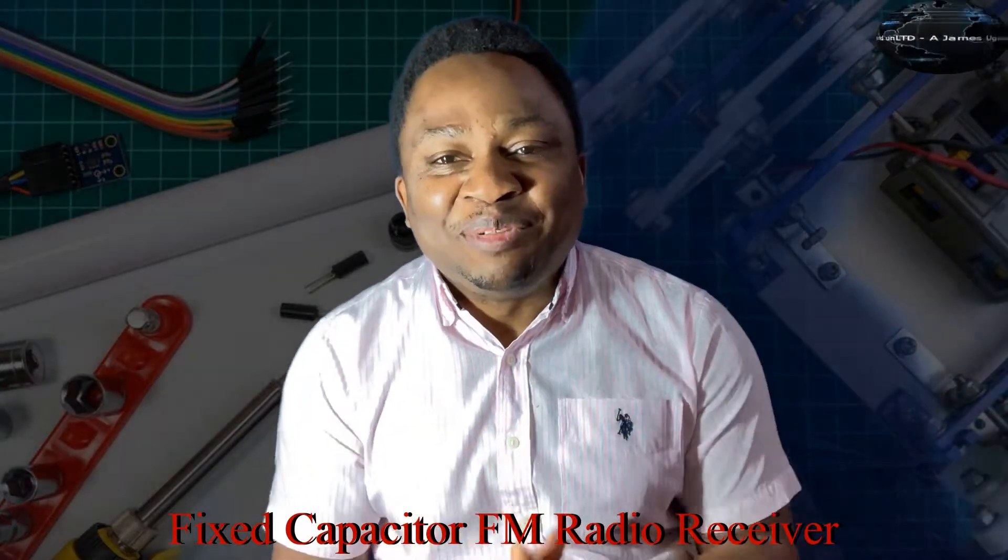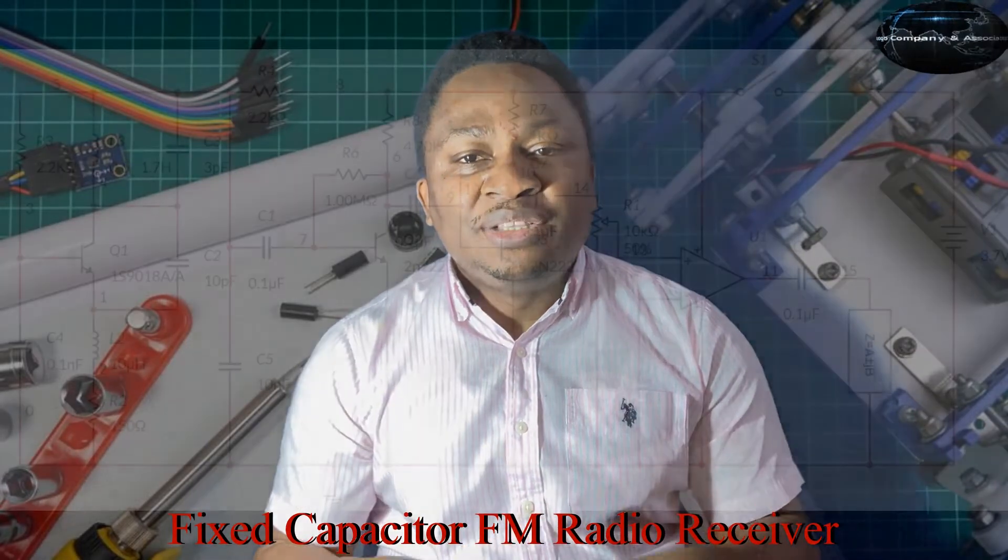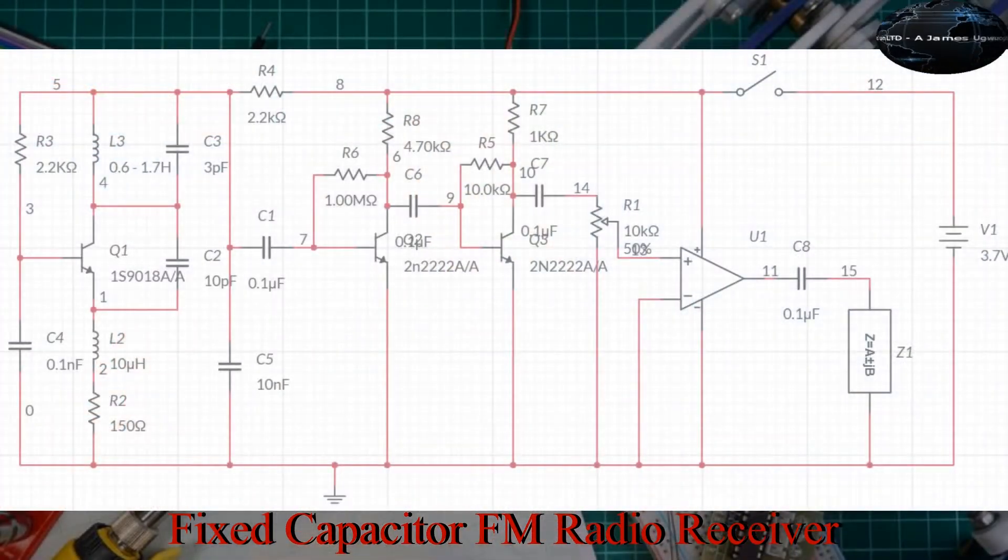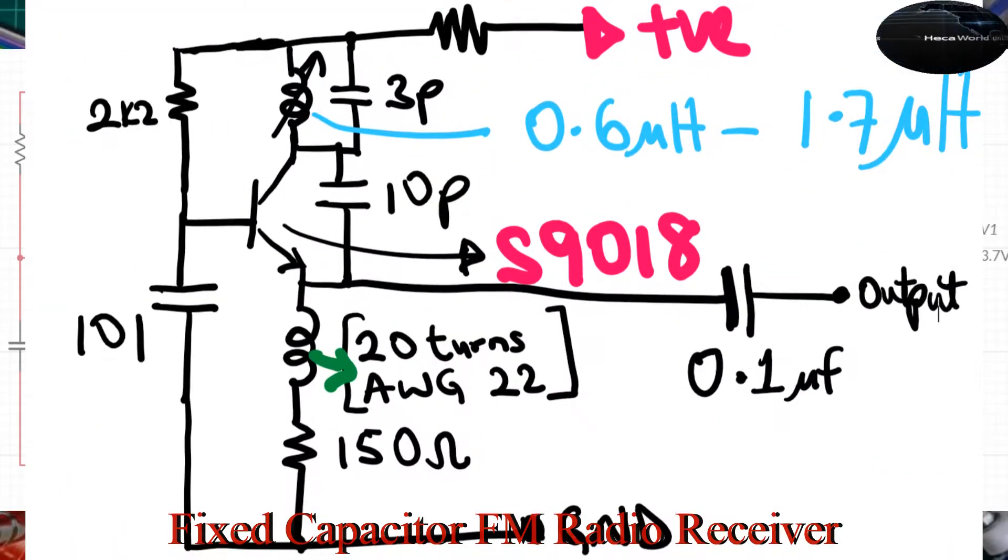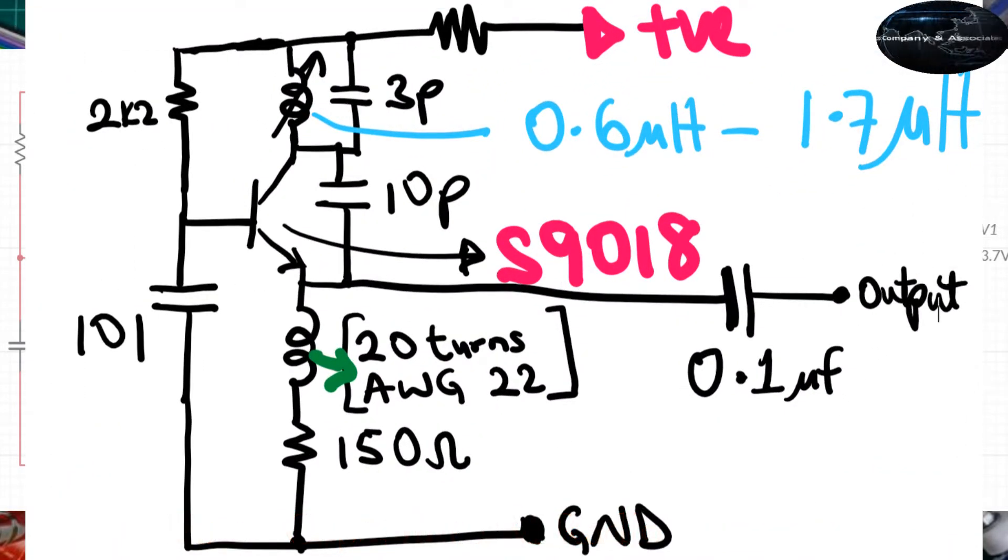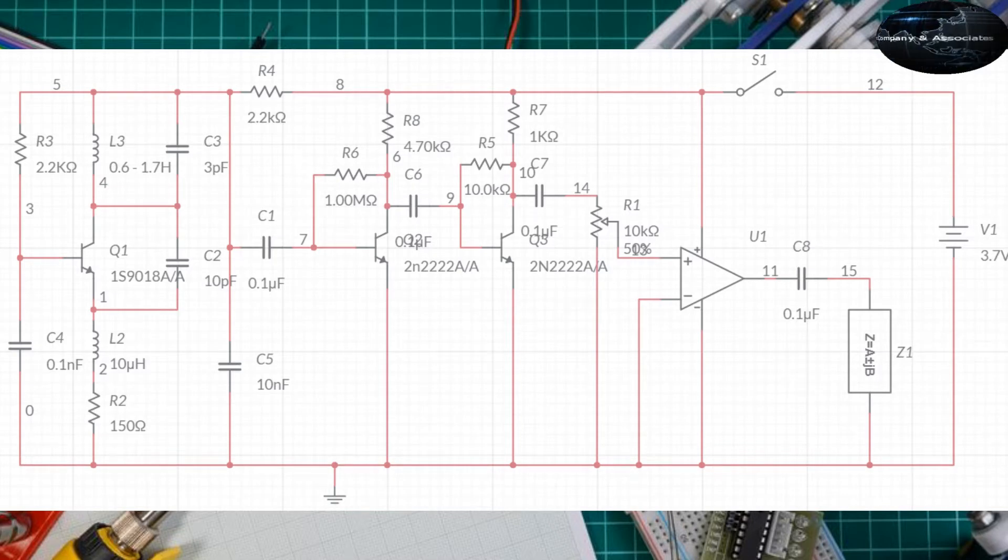Hi fellow enthusiasts, welcome to my channel. Let's go into today's video and we're going to come back at the end to wrap it up. This is a simple regenerative FM radio receiver. There are three transistors in this circuit. The first transistor, the S9018, is the regenerative receiver. The other two transistors are preamplifiers feeding into the LM386 amplifier.